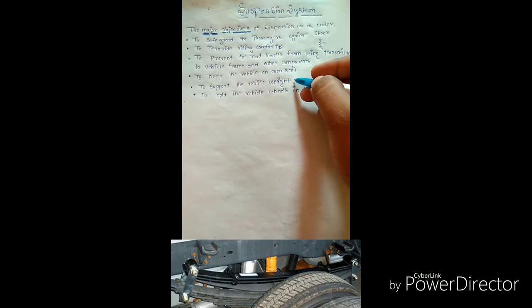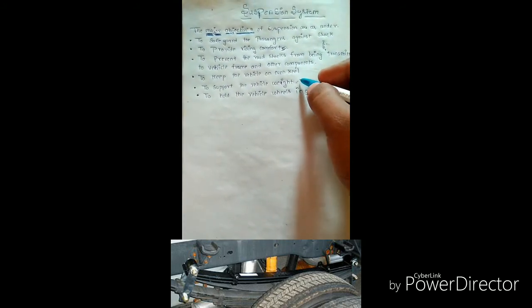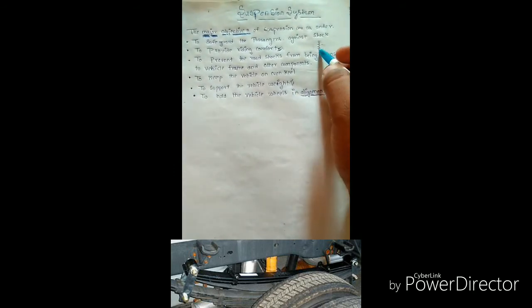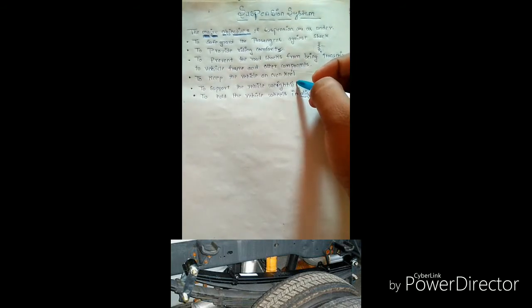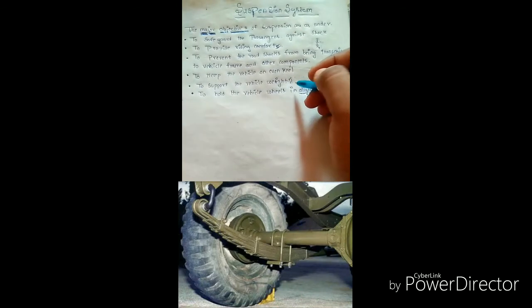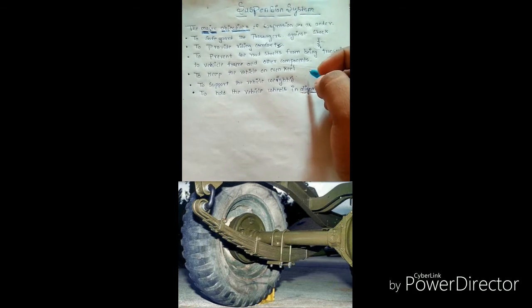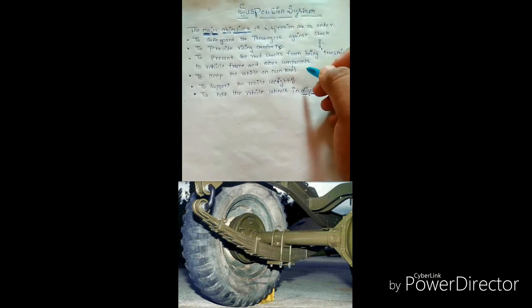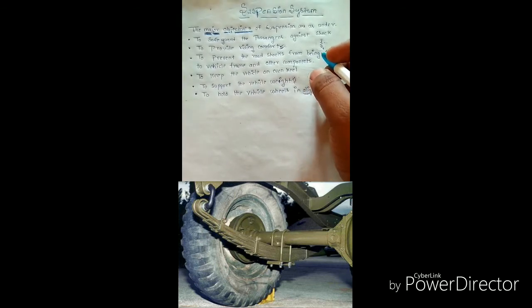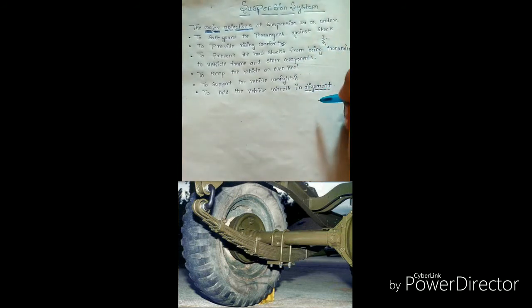This is an important point. As we know there is a lot of weight on any automobile, car, truck, etc. What the suspension does is it supports the weight of the vehicle, weight of the passenger, weight of the chassis and engine — it supports all of this. The suspension absorbs the weight and doesn't allow it to be transmitted directly to the ground.